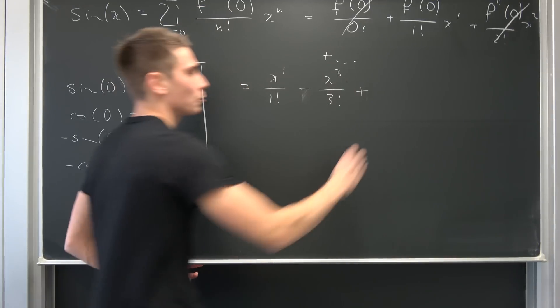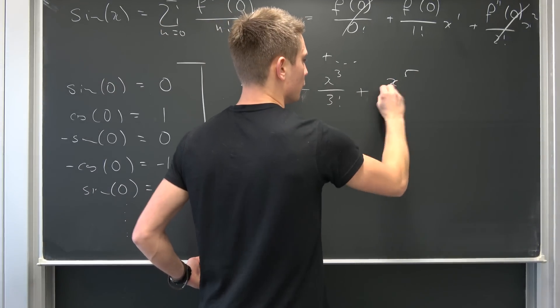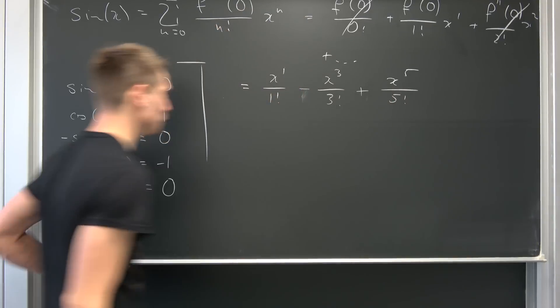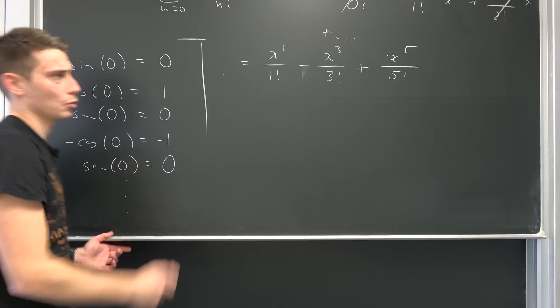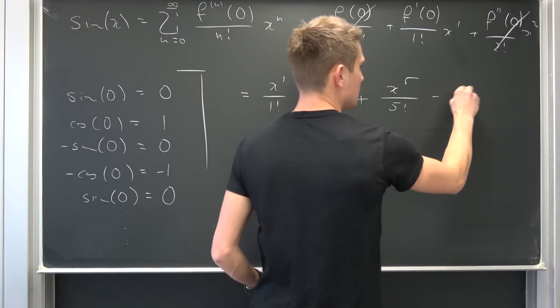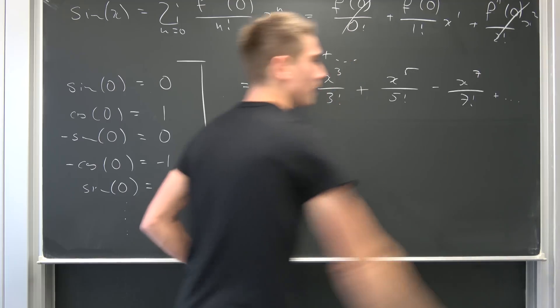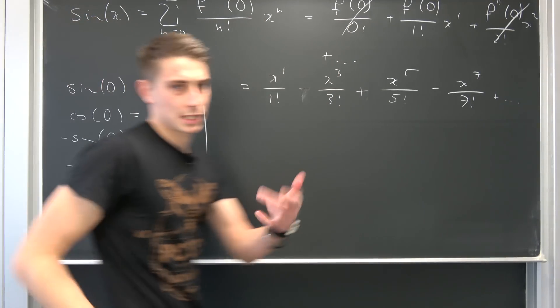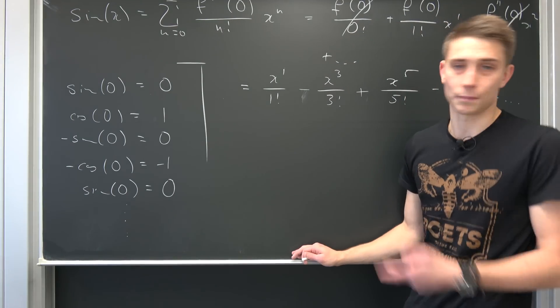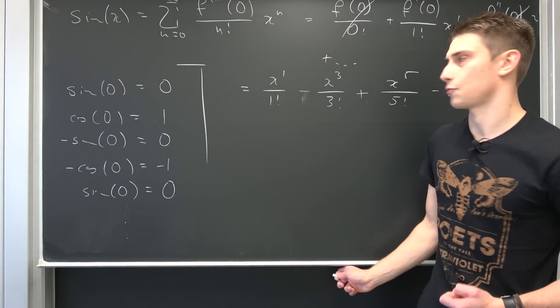And then the fifth term would be x to the fifth power over five factorial, because you would get just a regular one once again. One more iteration, negative x to the seventh power over seven factorial plus dot dot dot. Going on to infinity. So you see this is just a pattern that we are going to get, similarly to the cosine function.